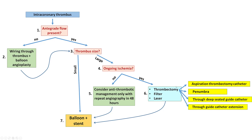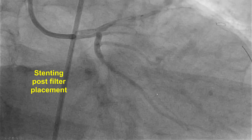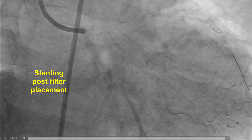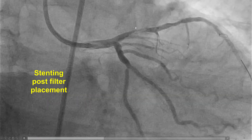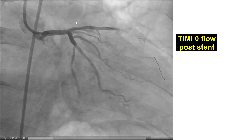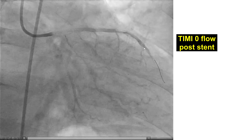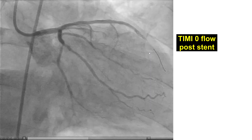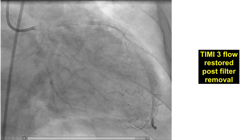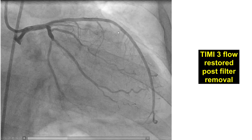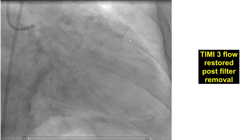Protection options include thrombectomy using various catheters, a filter, or laser. In this particular case, we decided to place a filter wire distally in the vessel, which is off-label. The filter wire was placed in the mid-LAD, and then balloons and stents were placed in the proximal LAD. After stent placement, there was TIMI zero flow distally and a filling defect inside the filter. The filter was retrieved and TIMI three flow was restored, suggesting the thrombus was successfully caught in the filter.